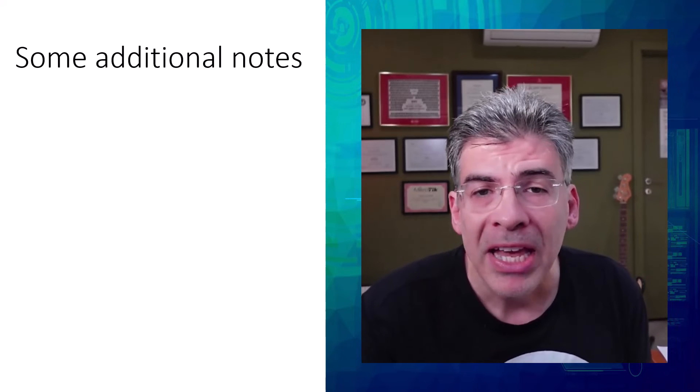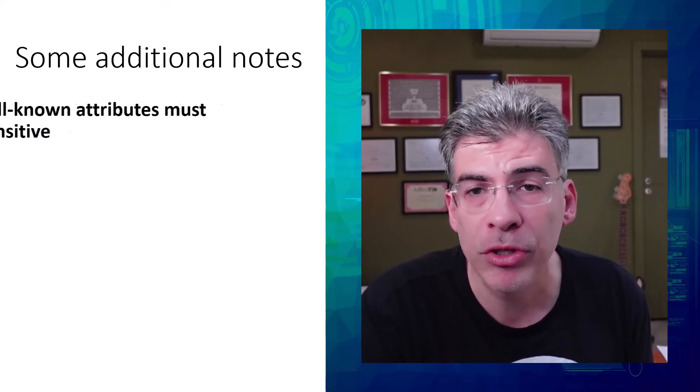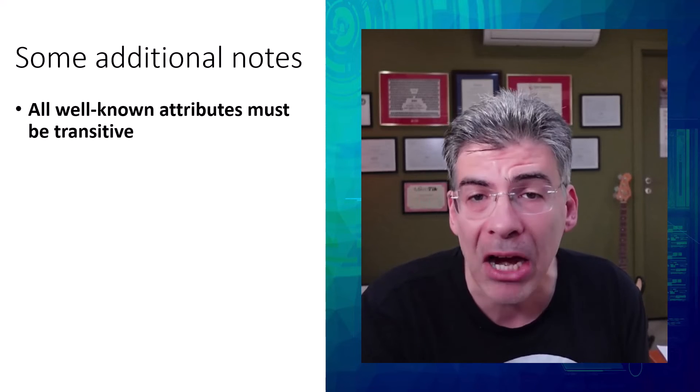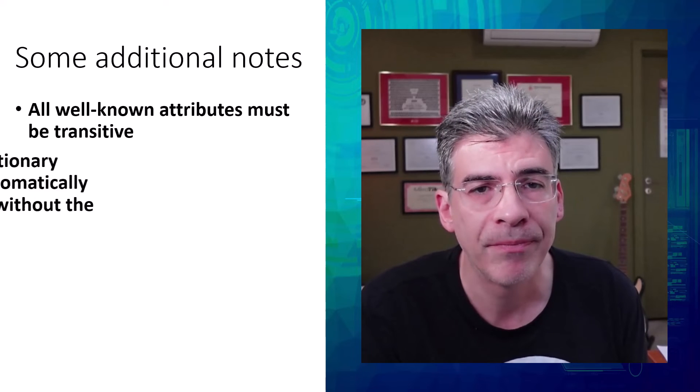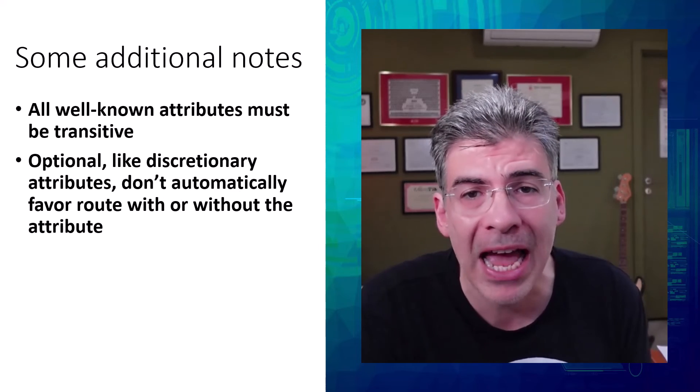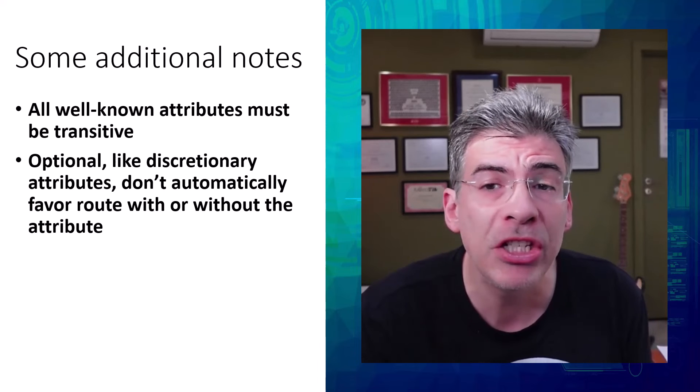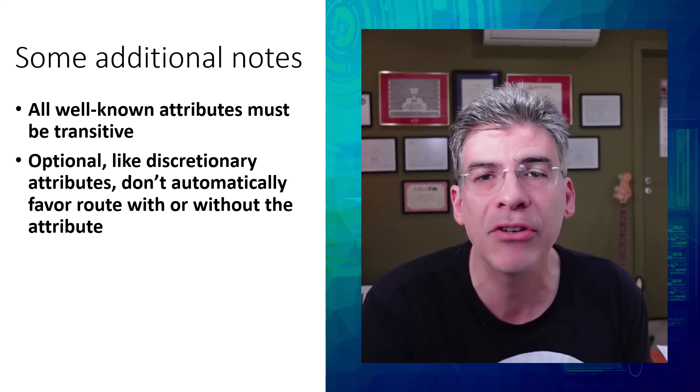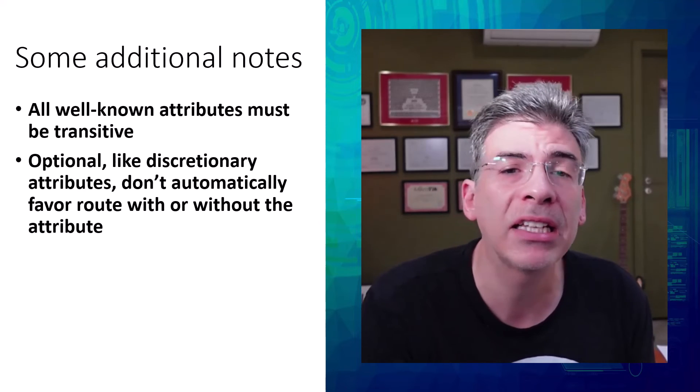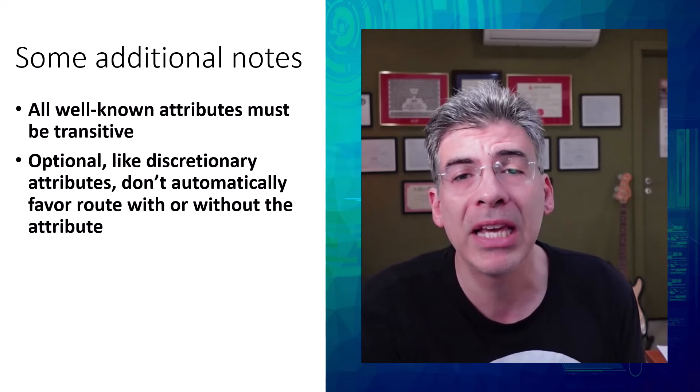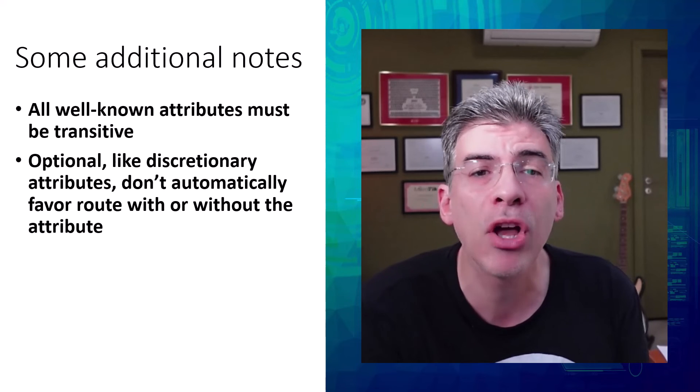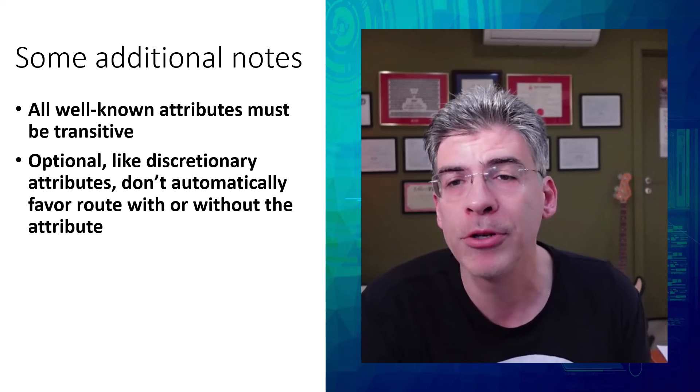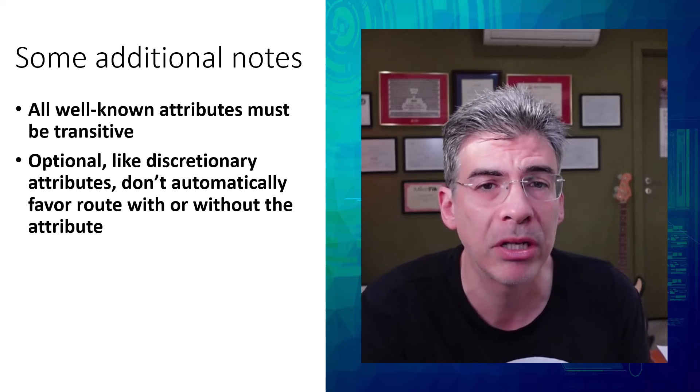Now, one more thing to note here is that well-known attributes by their very nature must be transitive. This means that they must necessarily be shared between BGP peers. Now, as is the case with discretionary attributes, if you're comparing two BGP routes based on an optional attribute and one route doesn't have an attribute, the decision process again doesn't automatically favor the route with or without the attribute. The behavior when comparing routes based on an optional attribute is not universally consistent across all optional attributes and it depends on the particular attribute in question.